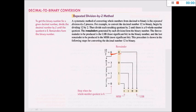We will continue until the quotient is 0. Now 6 divided by 2 is equal to 3, and the remainder is 0. The quotient is not 0, it's 3, so we continue. 3 divided by 2 is equal to 1, and the remainder is 1.